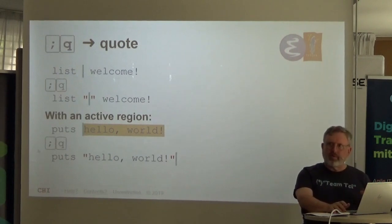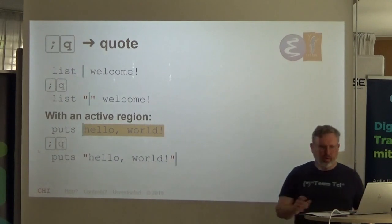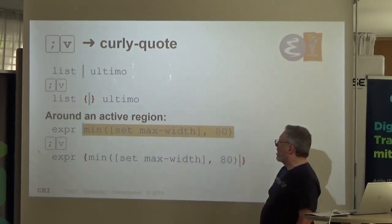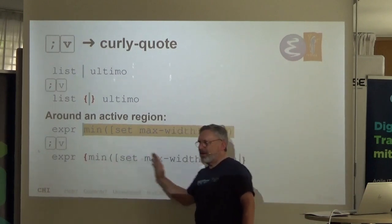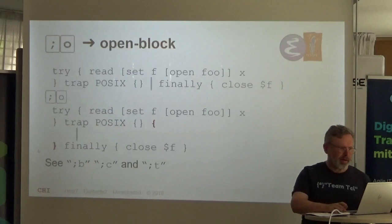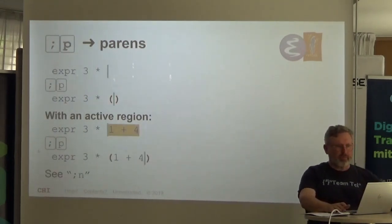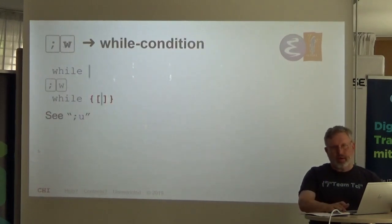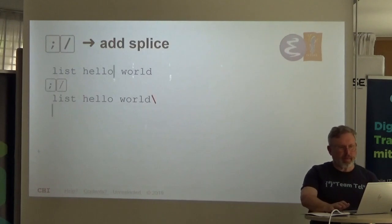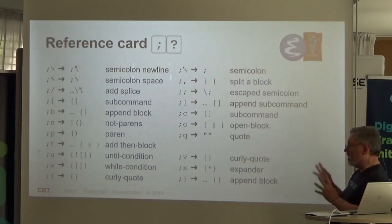I do quotes — that's one of our lexical conventions. And if I have an active region, I select it and type semicolon Q, and it quotes it for me. This can be useful with curly quotes. To help out Donald, I'm going to start doing everything with a single argument to expression, which I haven't been doing in the past, but it turns out my editor can help me there. So: open a block, make a subcommand with square brackets — also a shortcut — while, until, expansions, add a block — just frequently used things, and this is about it. Not too much burden for an Emacs user to learn these keystrokes.